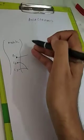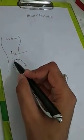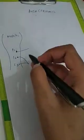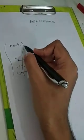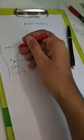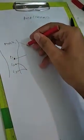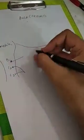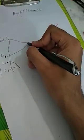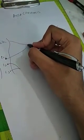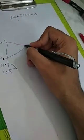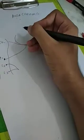Ansa cervicalis arises from C1, C2, and C3. C2 and C3 join together to make one branch, and C1 joins with the hypoglossal nerve — the 12th cranial nerve. Here is the hypoglossal nerve, and here is your C1 branch joining with it and moving forward.